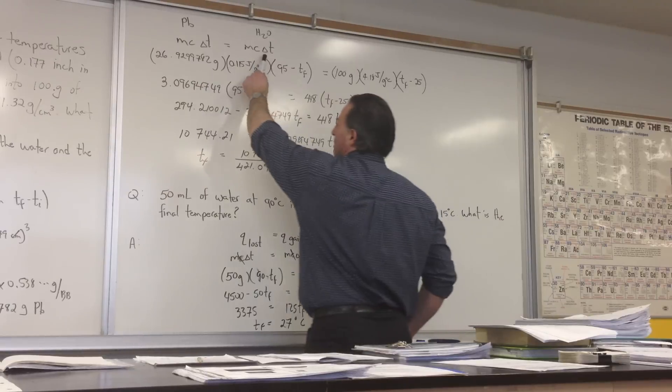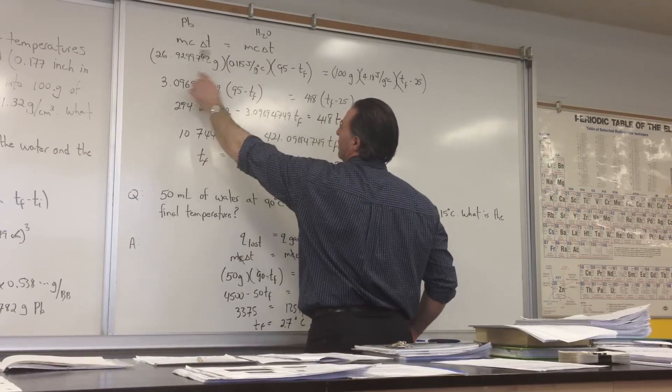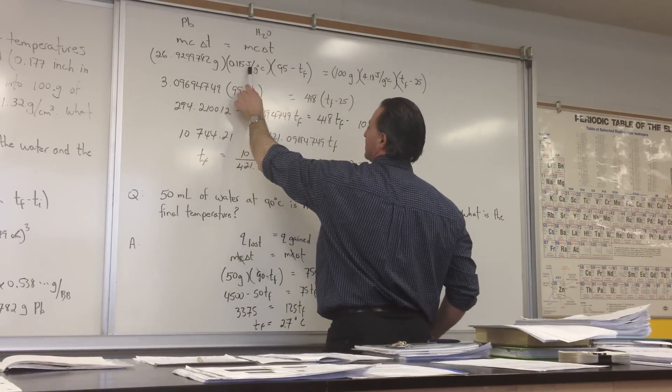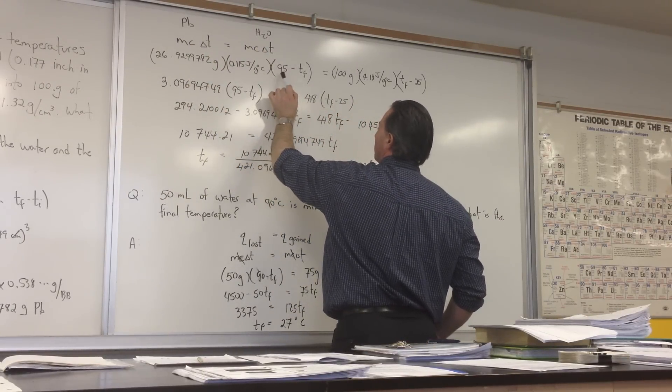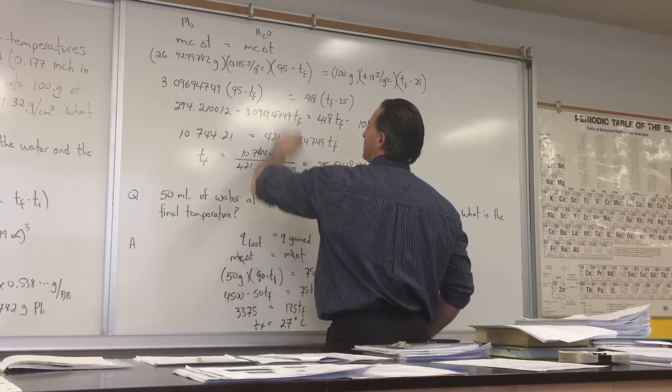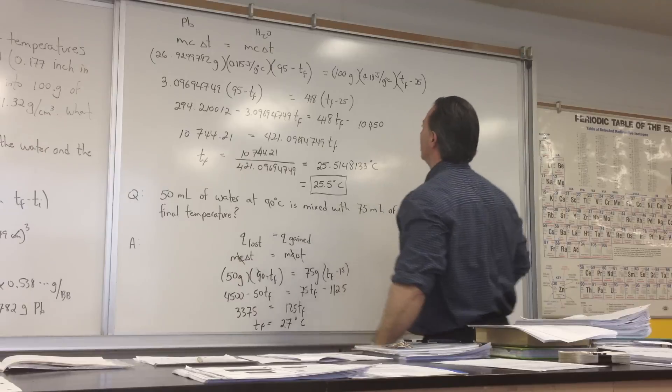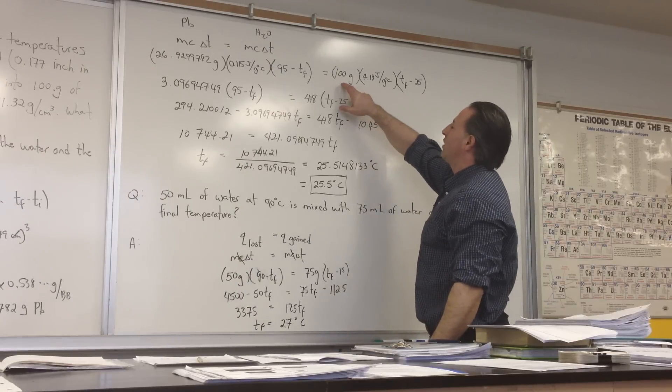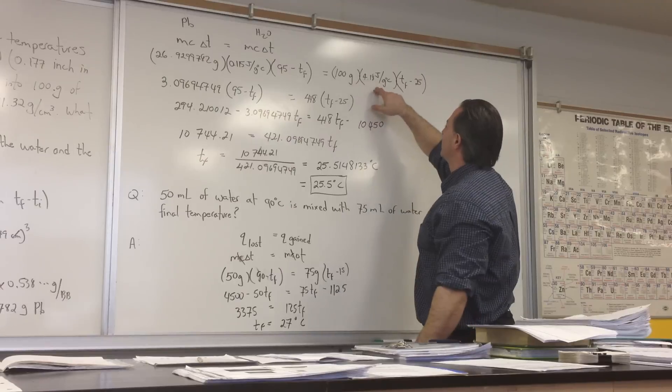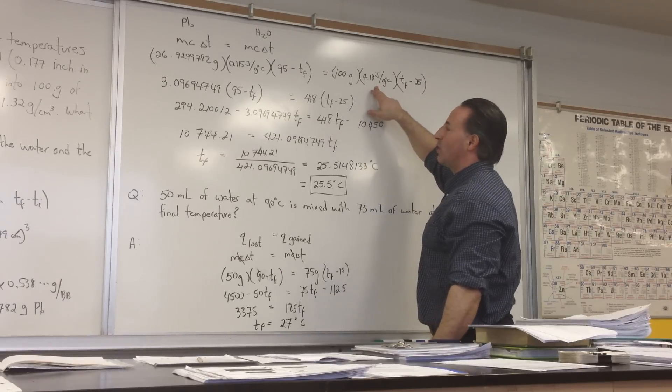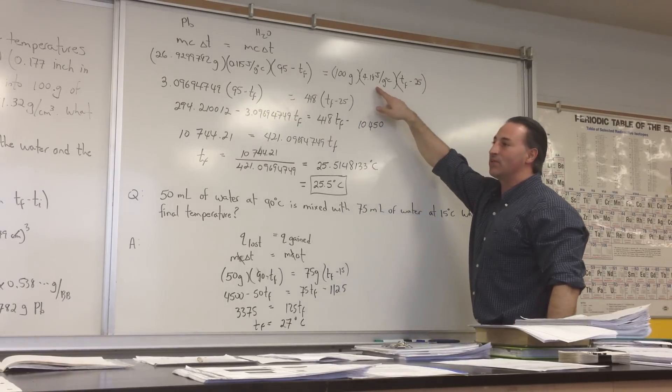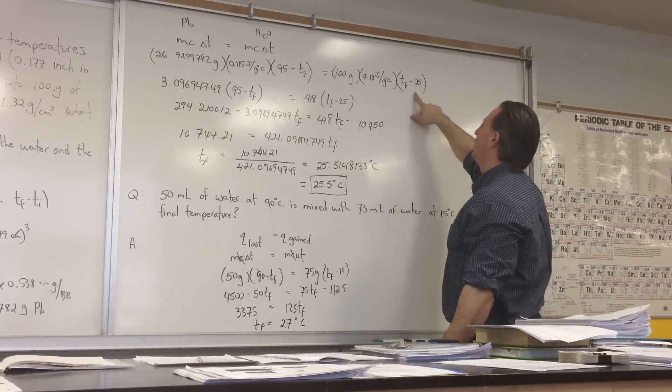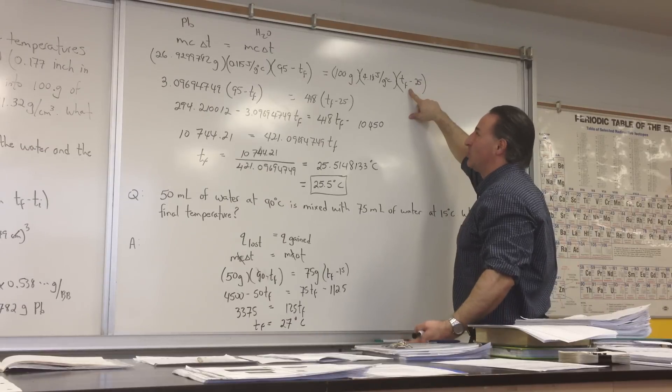MC delta T is equal to MC delta T. This is the lead, and this is the water. Here's the mass of lead, here's the heat capacity of lead, and I put 95 minus TF. This is the initial temperature, and that's the final temperature. 100 grams of water, heat capacity of water, and the molecules of water has the highest heat capacity of any other substance known, and then the temperature final, which we don't know, we're trying to find, minus the initial temperature.